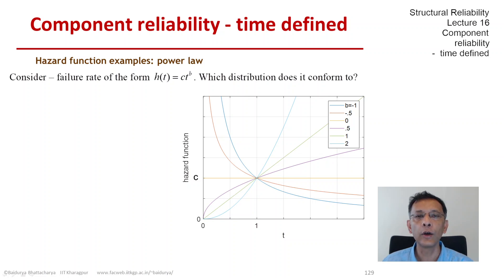Let's write out the reliability function in terms of the power law hazard function. It's straightforward: it's exponential of negative integral from zero to t of c times x to the power of b dx, where x is the dummy variable.